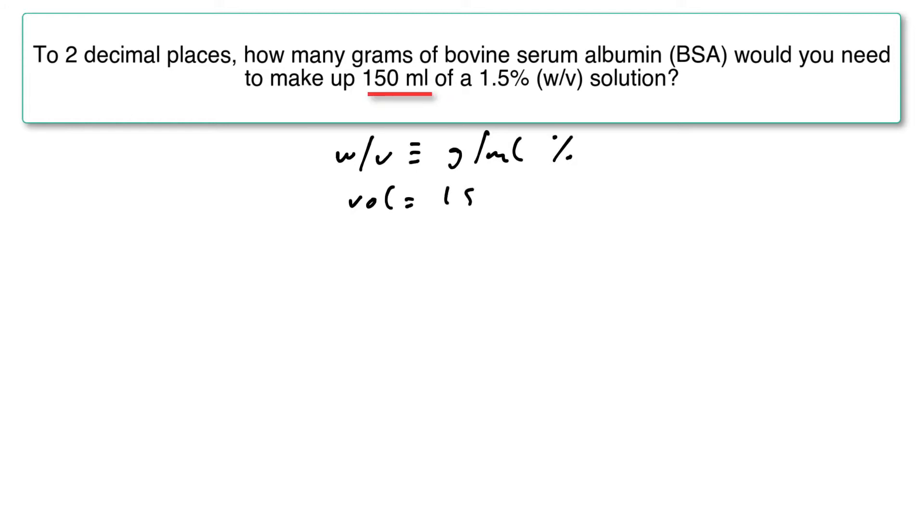Now we know that the volume is 150 mils. We know that the percentage is 1.5% and that a percentage solution is just the number of grams per mil multiplied by 100. That is, it's the grams per mil expressed as a percentage. So we know that percent is 1.5.